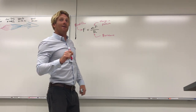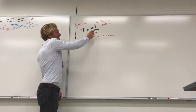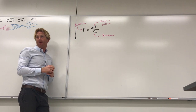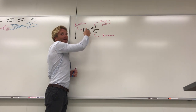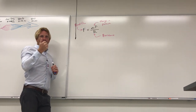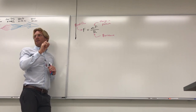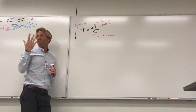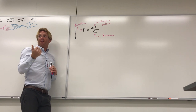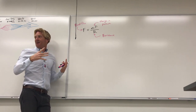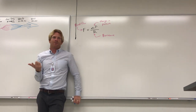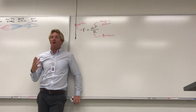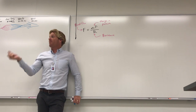If resistance goes up, blood flow goes down — if R goes to 2 while ΔP stays 1, flow becomes one-half. Resistance is the friction a fluid experiences in a tube — the more resistance, the harder it is for fluid to move through. One factor affecting resistance is the viscosity of the fluid: how sticky or thick it is. Honey has very high viscosity versus water which has lower viscosity. As viscosity goes up, resistance goes up, and blood flow goes down.